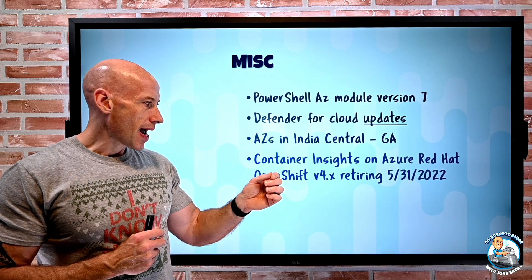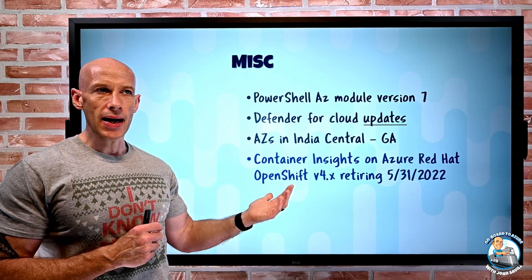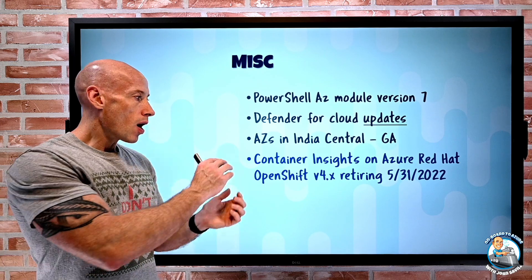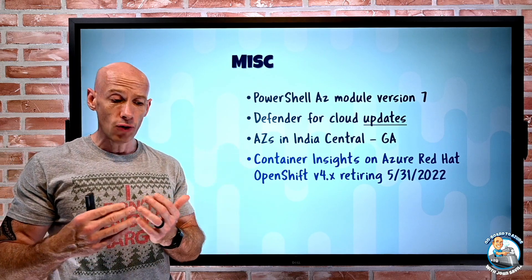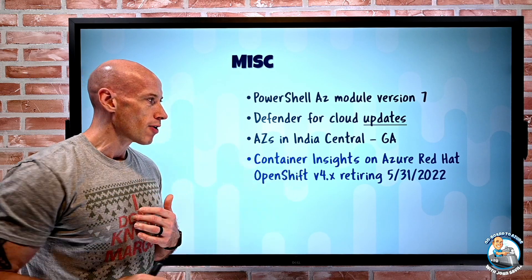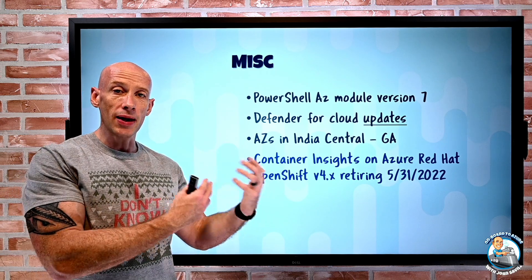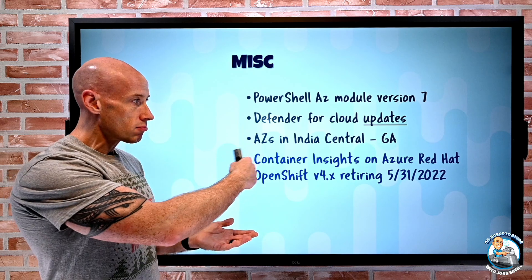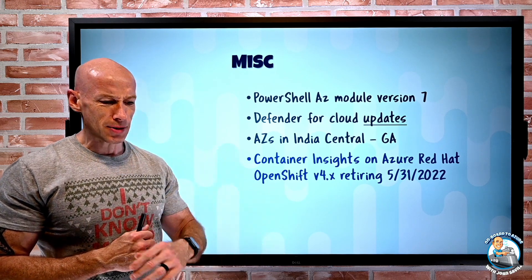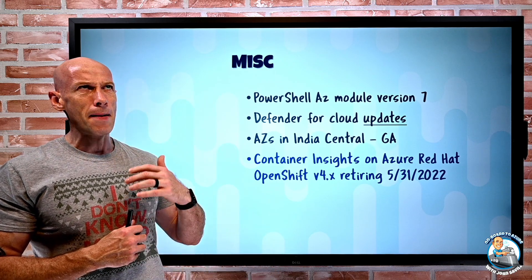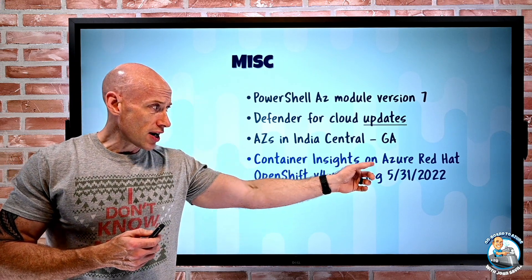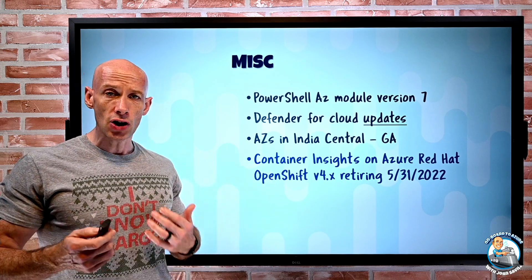Container insights for Azure Red Hat OpenShift v4 is retiring at the end of May. The recommendation is to shift to container insights for Azure Arc. Azure Arc for containers works for any CNCF-compatible Kubernetes, so rather than having something specific to Red Hat OpenShift, the better option is Azure Arc for Kubernetes with container insights on top. Since Red Hat OpenShift is CNCF compliant, it works with Azure Arc for Kubernetes, giving you automatic monitoring agent updates, better metric-based alerting, better onboarding, and an all-around improved experience.